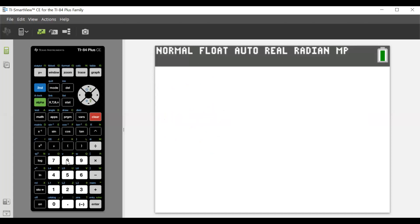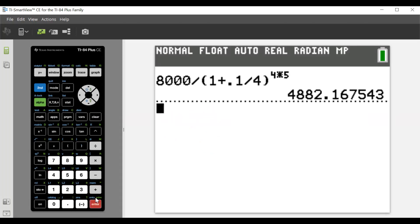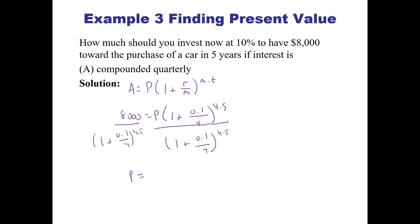So we have $8,000 divided by 1 plus 0.1 divided by 4, raised to the power of 4 times 5. That gives us $4,882.17 if we round to the nearest penny.